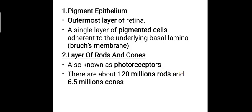The first layer is the pigment epithelium — the outermost layer of the retina. It is a single layer of pigmented cells adherent to the underlying basal lamina, also known as Bruch's membrane, which we discussed in the previous class on the middle coat.